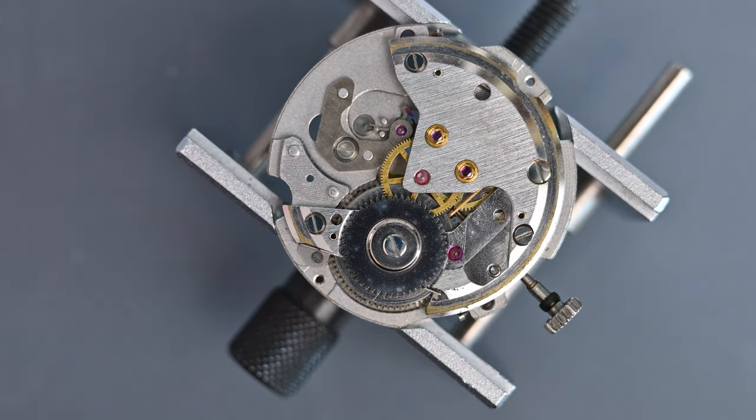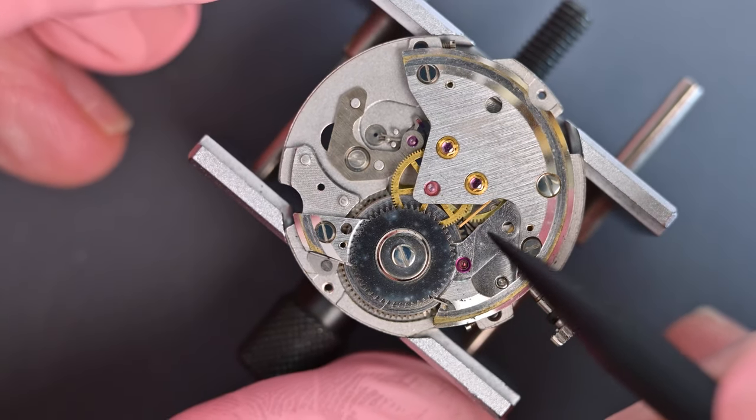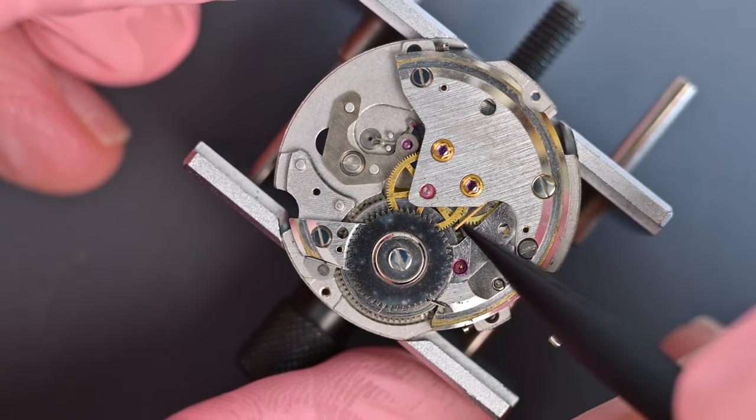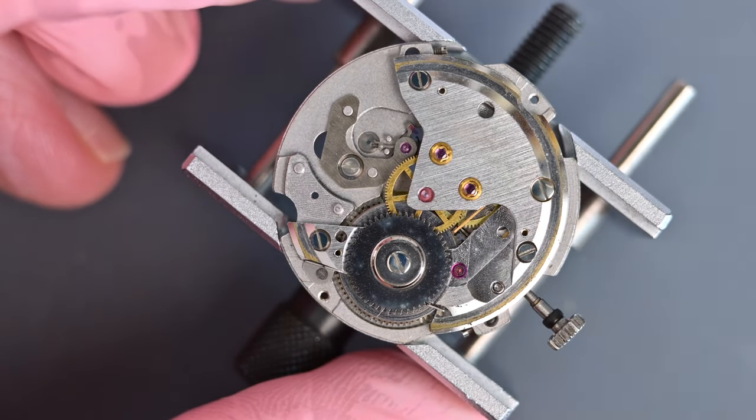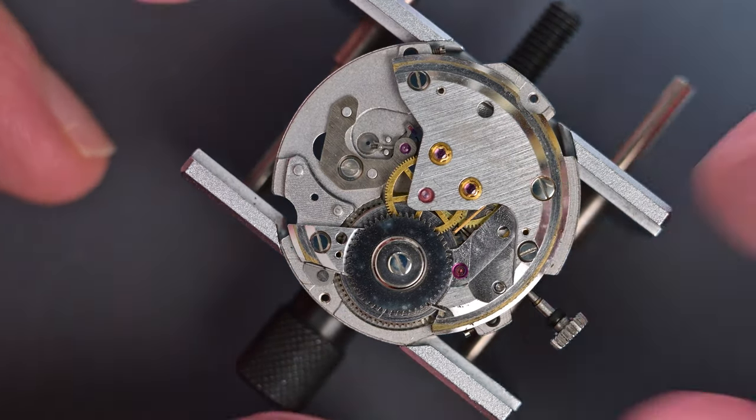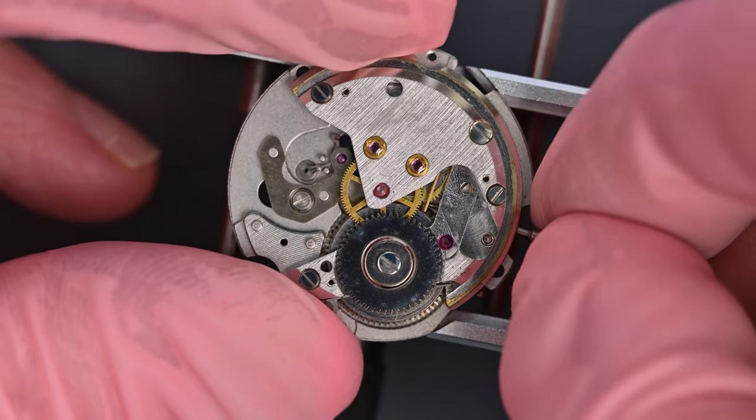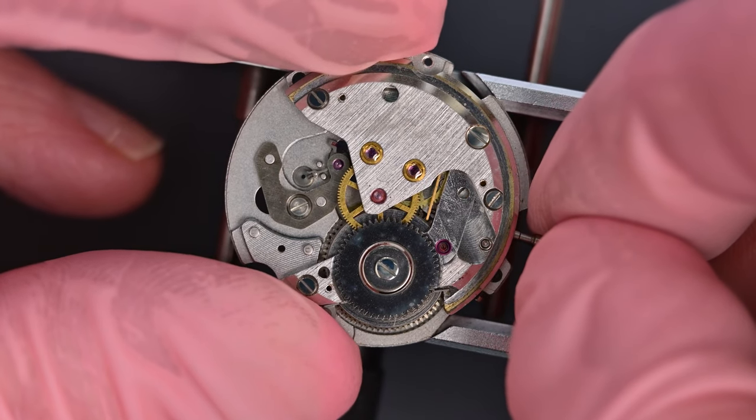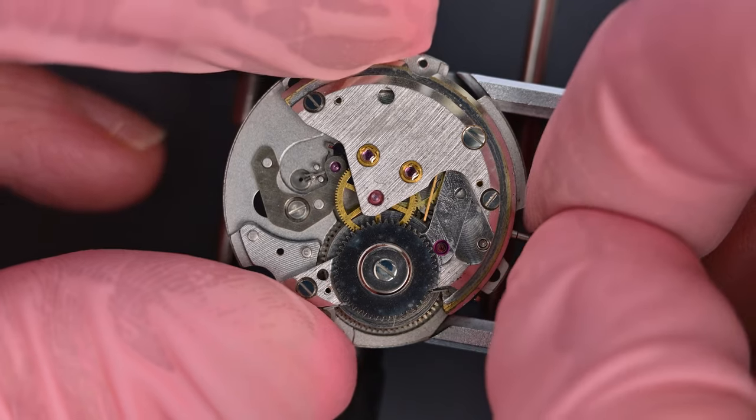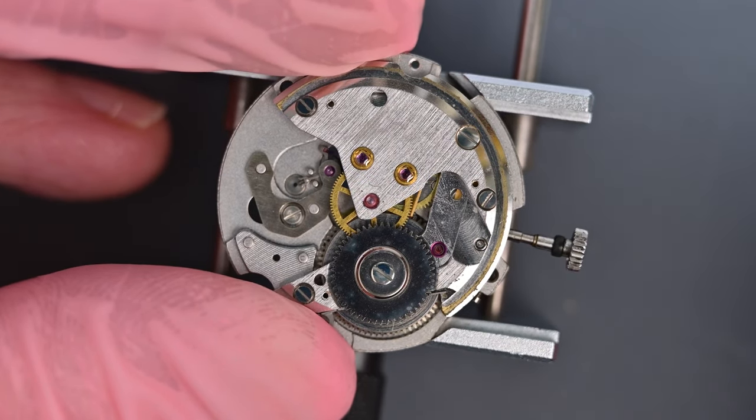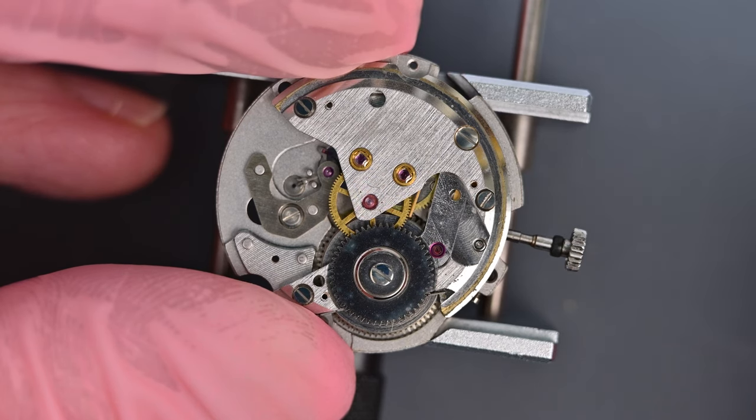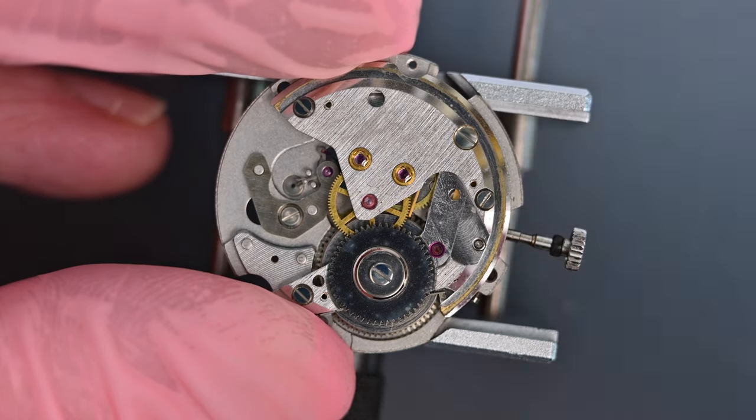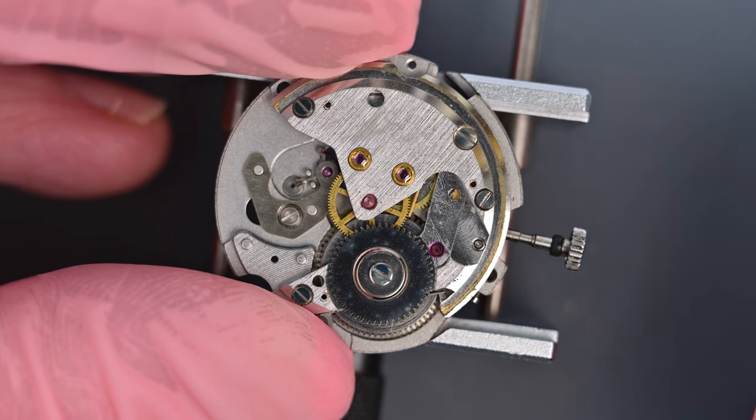Maybe before that I'll just point out the hacking lever. So you can see this lever just here. This is the hacking lever and that acts upon the fourth wheel. Let's just pull the crown out. So you can see that's the quick set position. And that's the time setting position. And you can see that the hacking lever touches the fourth wheel, stopping the movement, stopping the seconds hand initially, but then of course that will work its way through to the rest of the gear train.